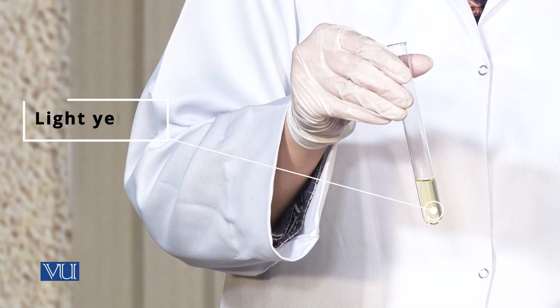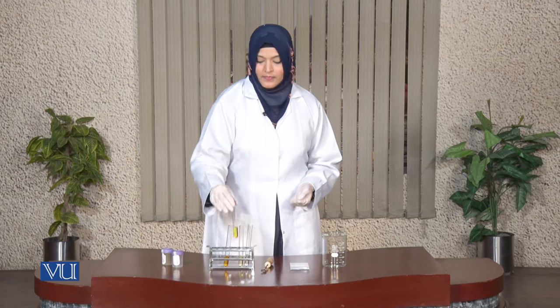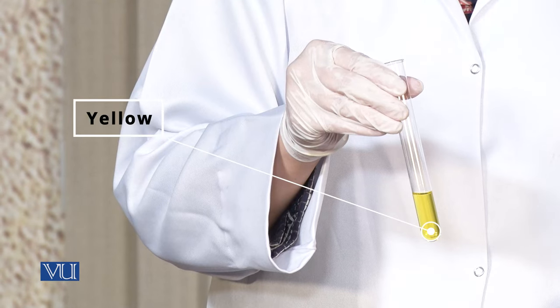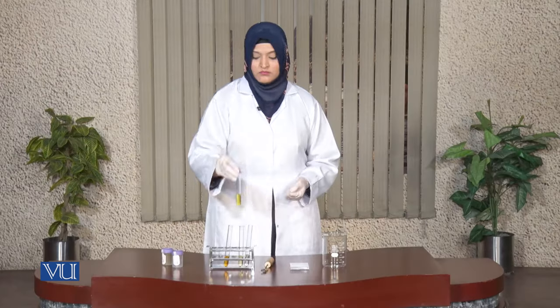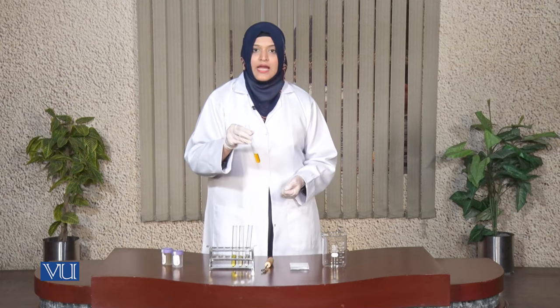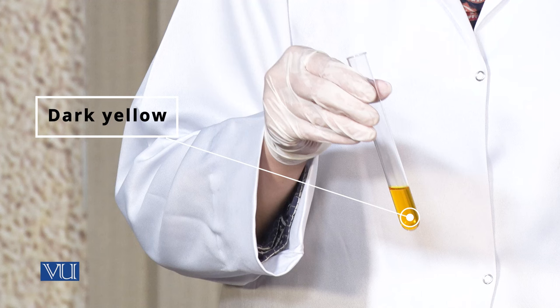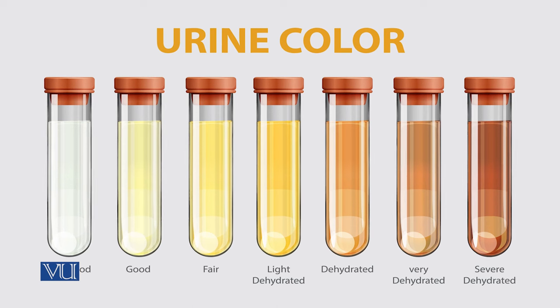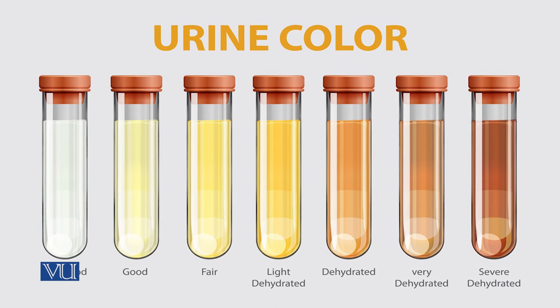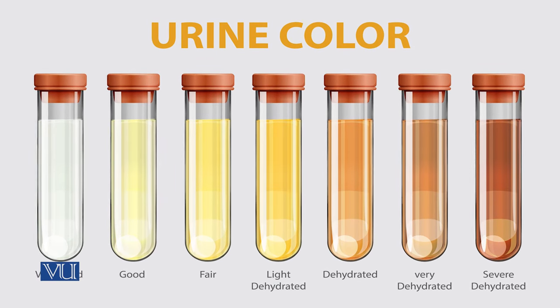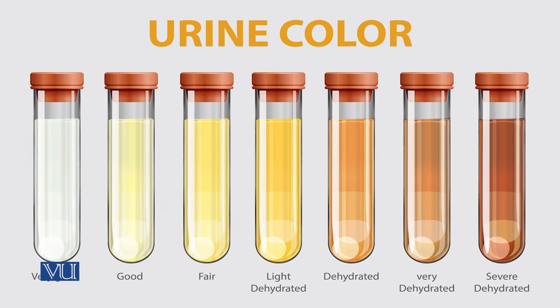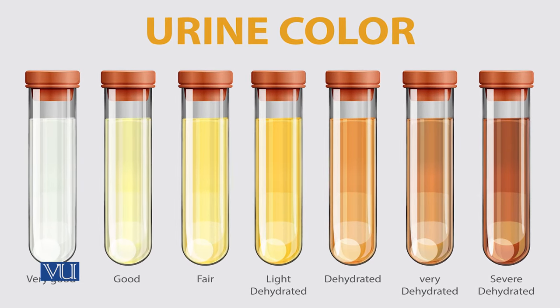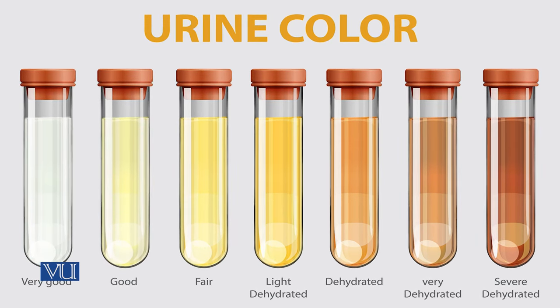The sample colors we usually observe while doing macroscopic analysis are straw color, light yellow, yellow, and dark yellow or orangish yellow. The color of urine changes with hydration levels. Normal urine should look straw color or light yellow. If the color appears dark yellow, it means the body is dehydrated and water intake should be increased. The color may also change due to pigments, which indicates a health condition needing medical attention.